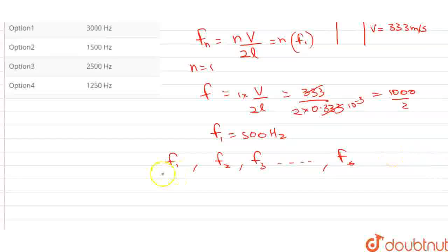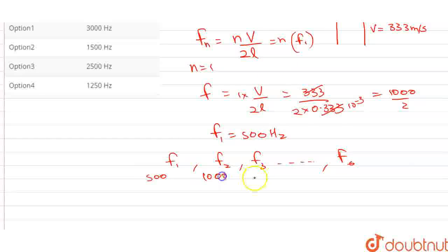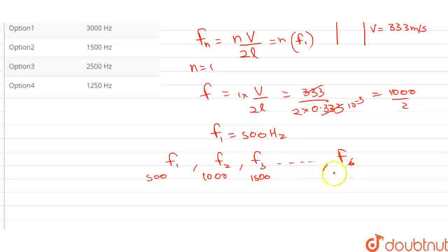So f1 — how much was it? This was 500 Hz. f2 — how much was it? This was 2 times 500, that is 1000 Hz. And f3 — this was 3 times 500, that is 1500 Hz. Similarly, 6 multiplied gives us 6 times 500, which is 3000 Hz.